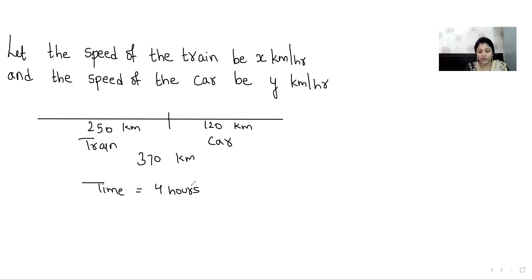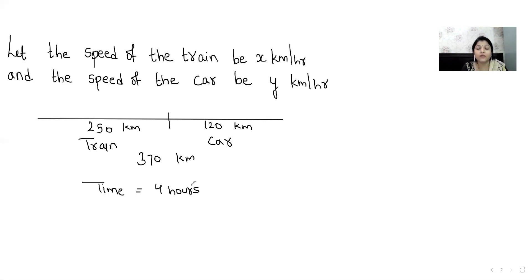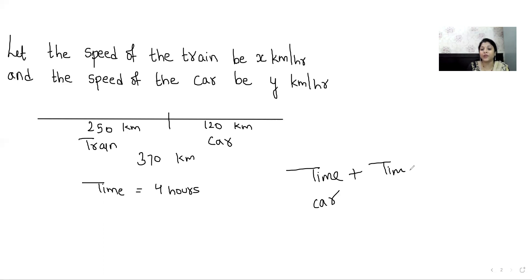Now we have to make the equation. In sums based on speed, distance, and time, we always search for what total we know — total speed, total distance, or total time. Whatever total we know, we make the equation in that particular unit. In this sum, we know the total time: the total time taken by the train and car is 4 hours. So we are going to make the equation with the base of time. The equation will be: time taken by car plus time taken by train equals total time, that is 4 hours.